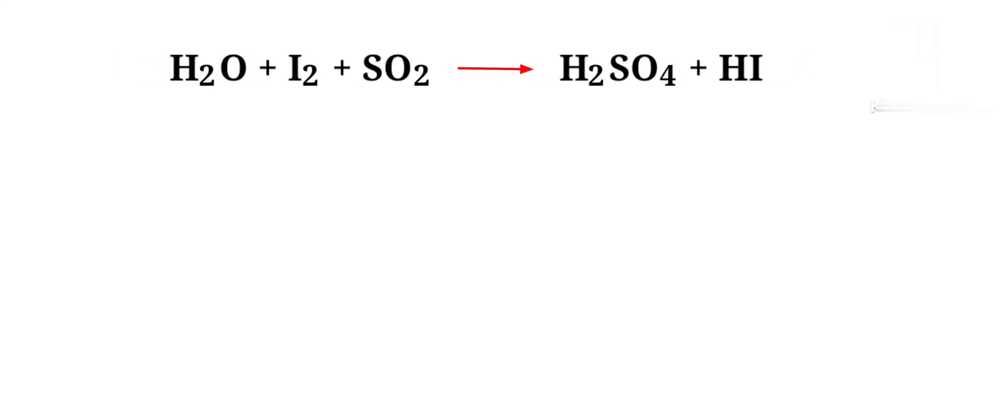First thing we do is give each compound a letter coefficient. AH2O plus BI2 plus CSO2 gives us DH2SO4 plus EHI.